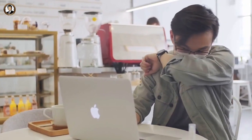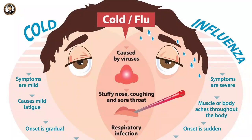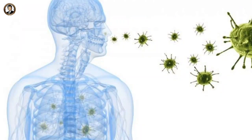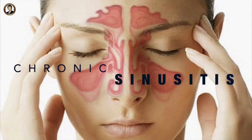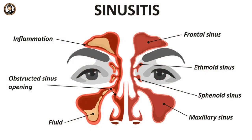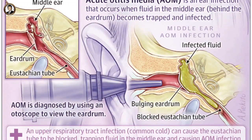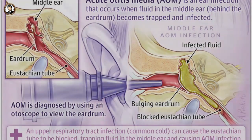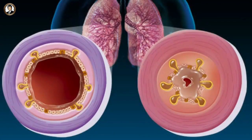Complications: In most cases, the common cold is a self-limiting illness and resolves without complications. However, in certain individuals — particularly those with weakened immune systems or underlying respiratory conditions — complications may arise. These can include sinusitis (inflammation of the sinuses), otitis media (middle ear infection), bronchitis (inflammation of the bronchial tubes), or rarely pneumonia.